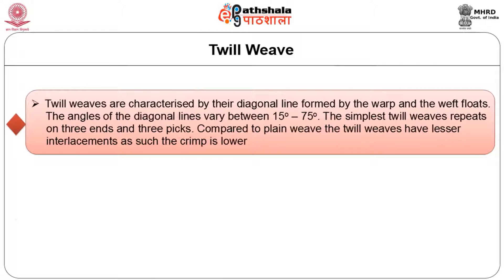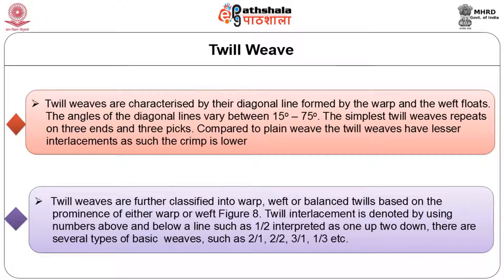The second basic weave is the twill weave, which is characterized by a diagonal line formed across from left to right or from right to left. The angle of twill varies between 15 to 75 degrees. The simplest twill weave repeats on three ends and three picks. Compared to plain weave, twill weaves have fewer interlacements and lower crimp. Twill interlacements are denoted by using numbers above and below a line, such as one by two, interpreted as one up, two down.